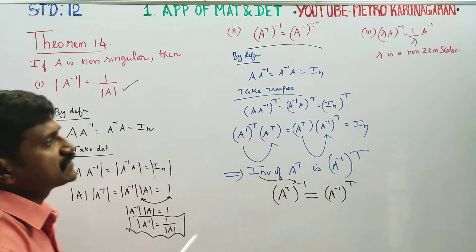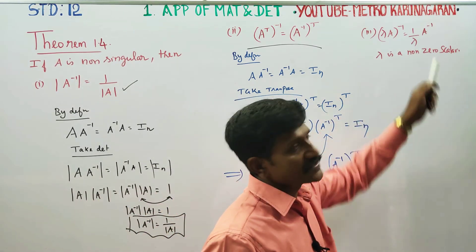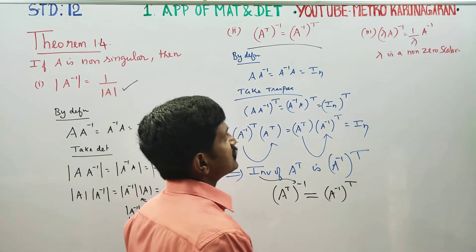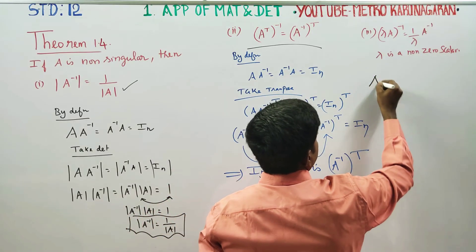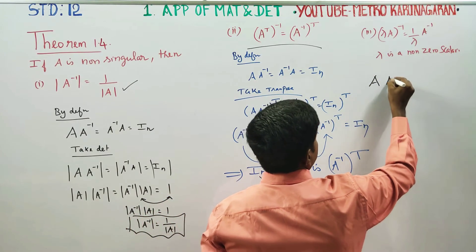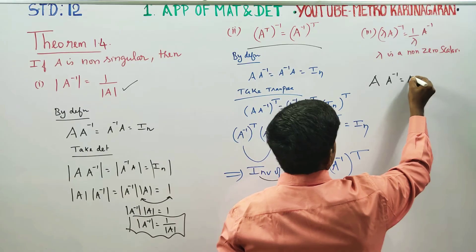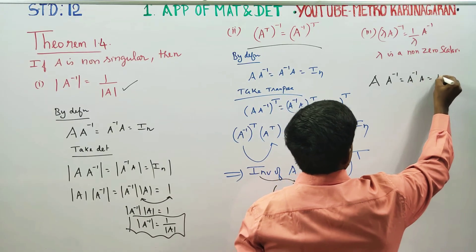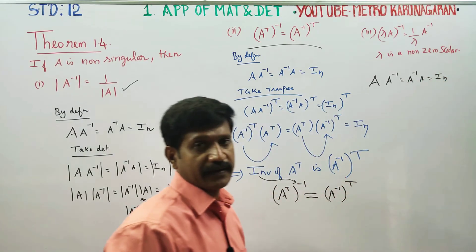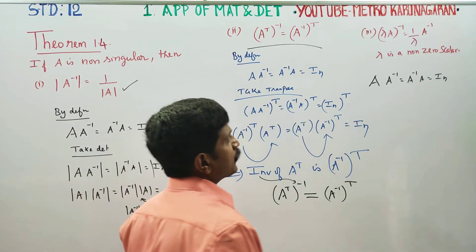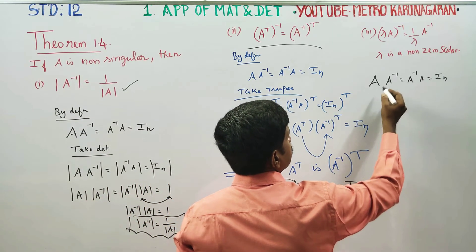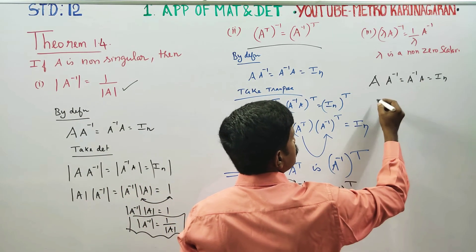Now, if lambda is a non-zero scalar, we have to prove the third result. I am going to start with the formula for the inverse of lambda A.